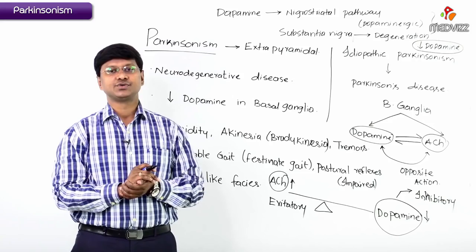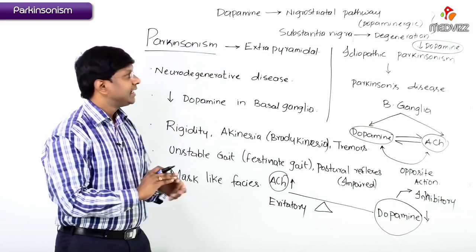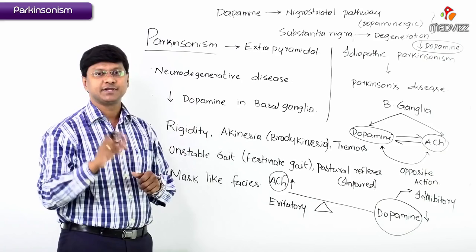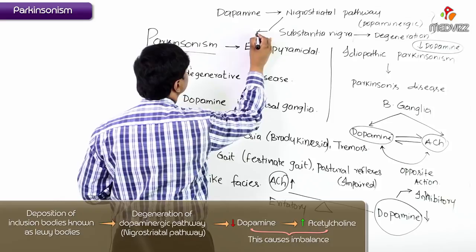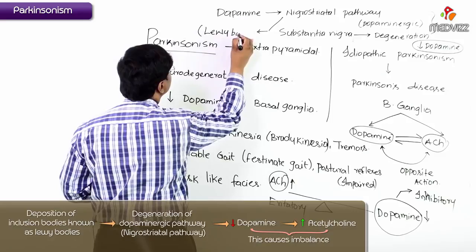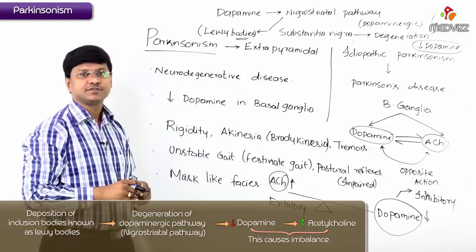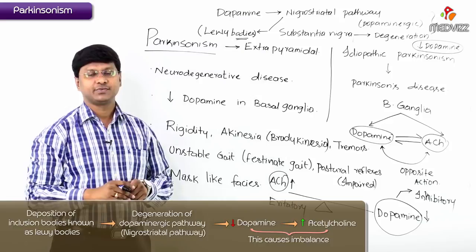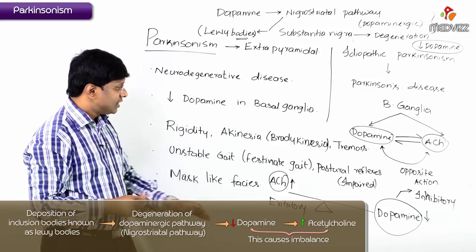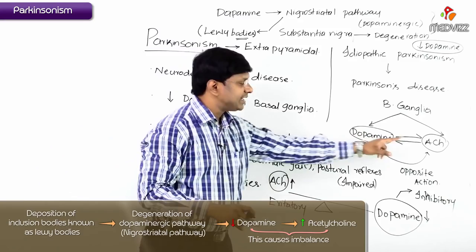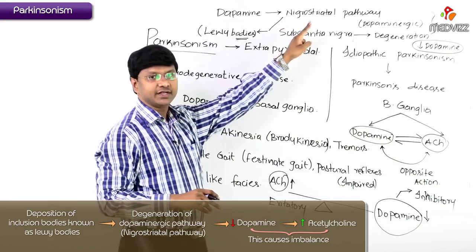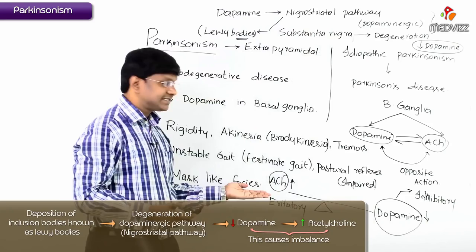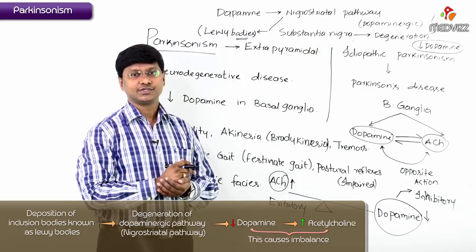The major pathology in Parkinsonism is the decrease in dopaminergic neurons. This degeneration occurs because of the deposition of inclusion bodies called Lewy bodies within the nigrostriatal pathway. Because of the Lewy body deposition, there is degeneration of the dopaminergic pathway, resulting in decreased dopamine. This means acetylcholine dominates in the basal ganglia.